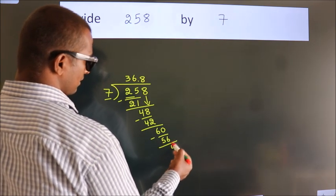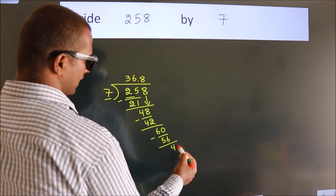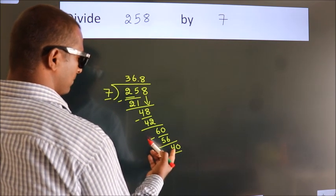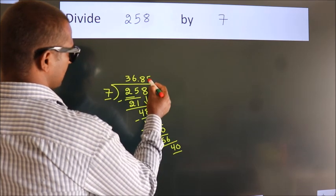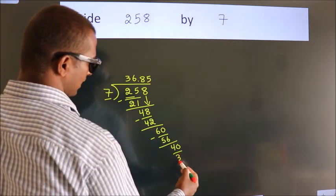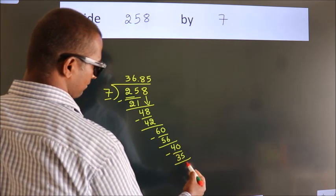After this, we already have the decimal, so directly take 0. So 40. A number close to 40 in the 7 table is 7 times 5, 35. Now we subtract. We get 5.